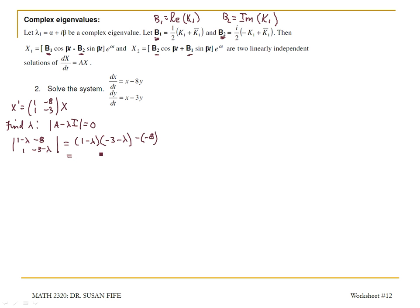And if I expand this, I'm going to get lambda squared. Here I get a negative lambda and a positive 3 lambda. That's going to give me a positive 2 lambda. So lambda squared, minus 3 plus 8, gives me lambda squared plus 2 lambda plus 5, and that's equal to 0.